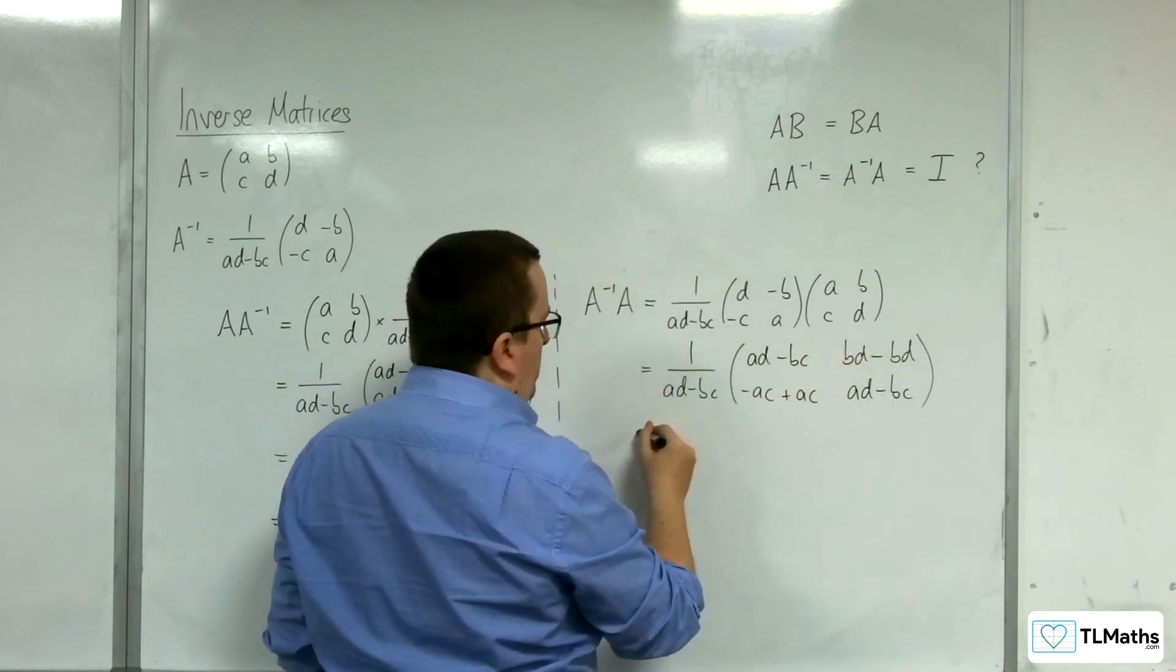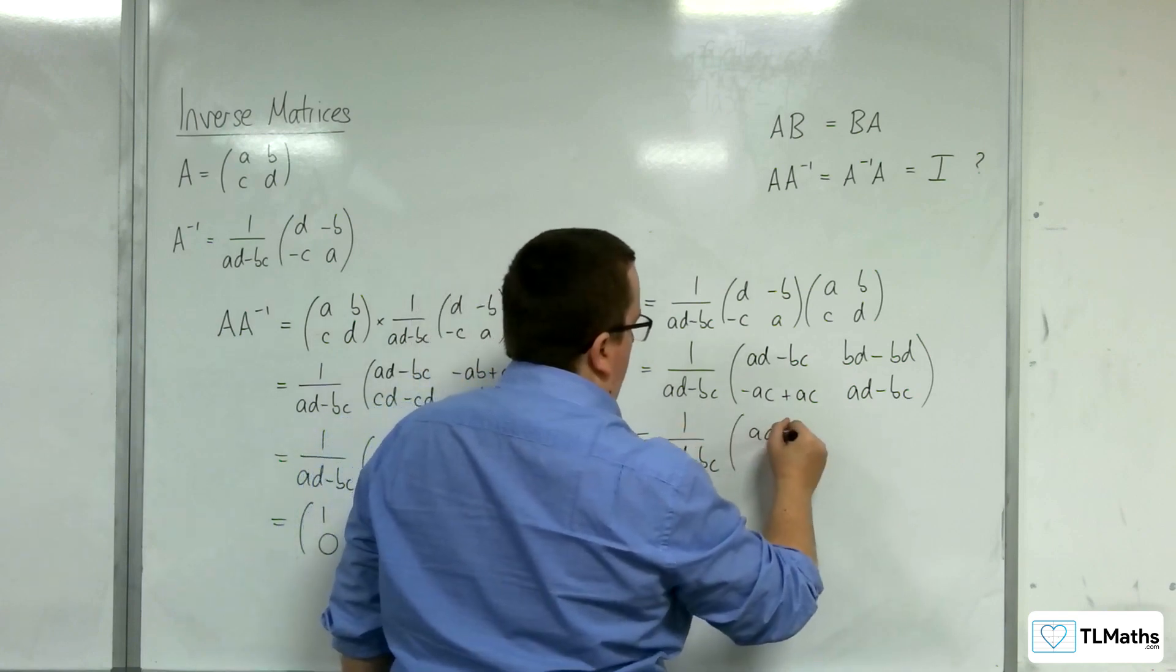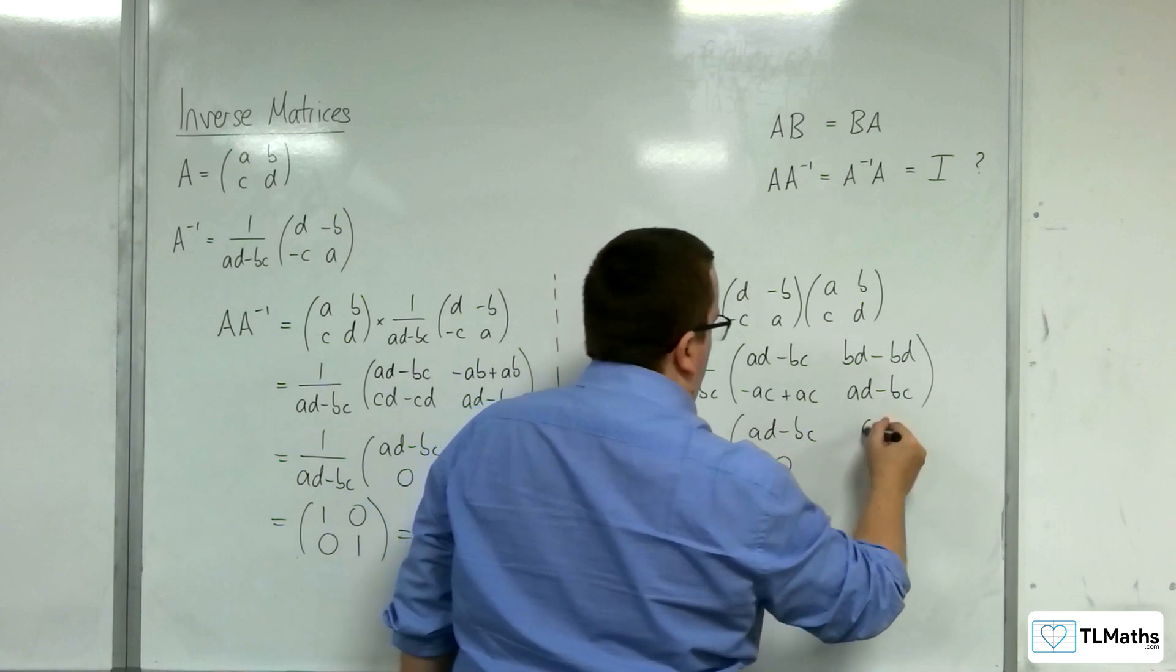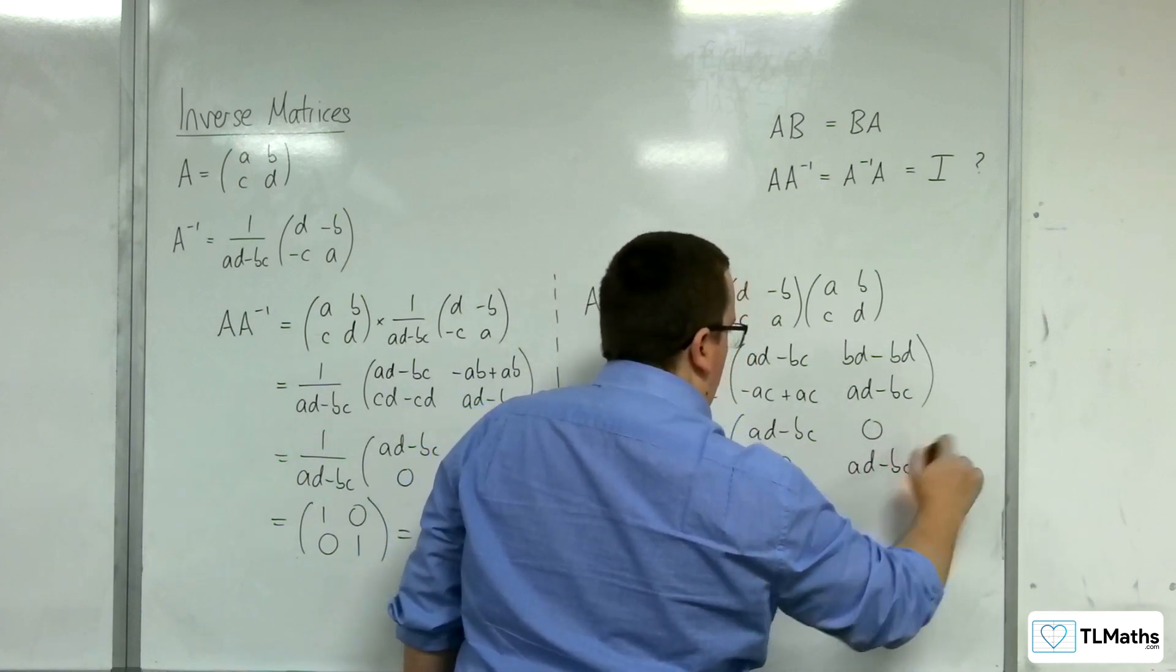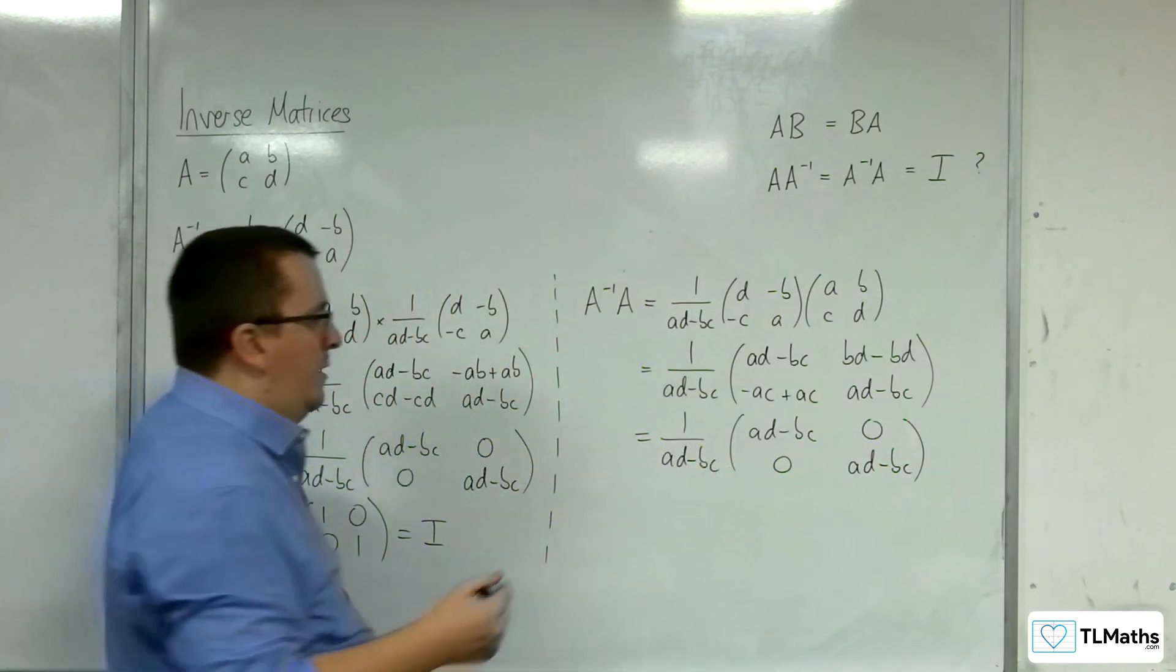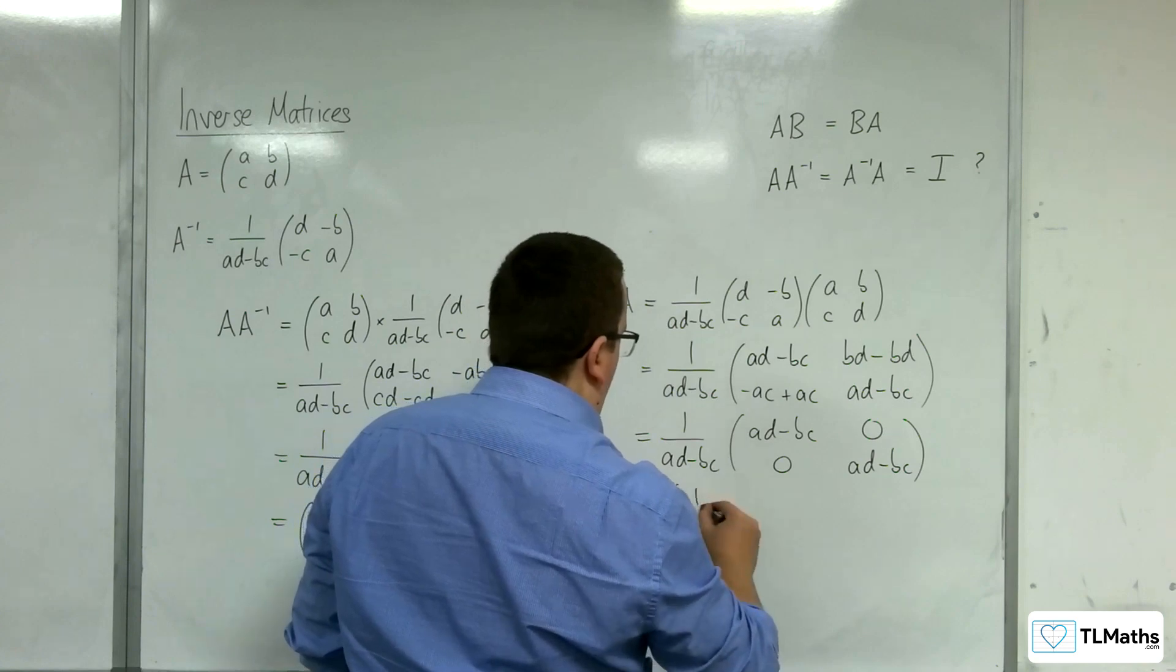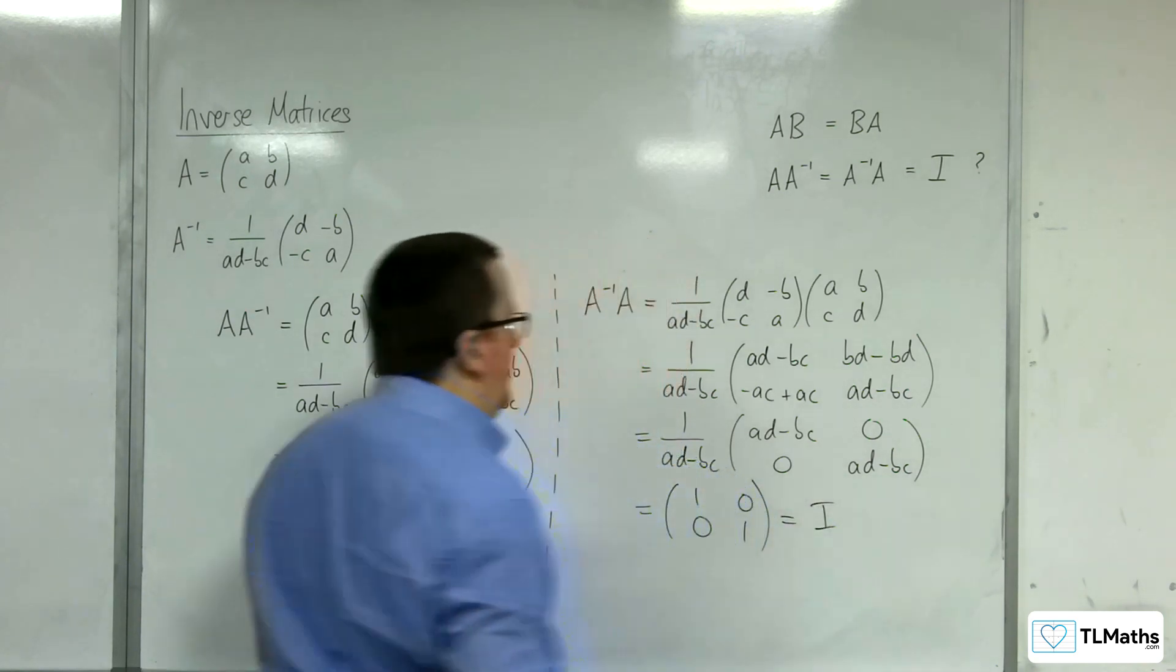This diagonal, both of those elements will be 0. So AD - BC, 0, 0, AD - BC. Like so. And of course, when I multiply through by the 1 over AD - BC, I'm going to get 1, 0, 0, 1, which is the identity matrix.